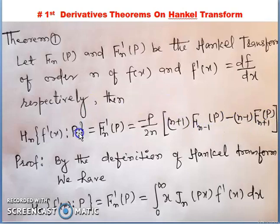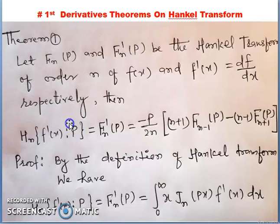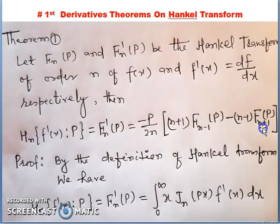Let us repeat: n is the order; the Hankel transform of f'(x) such that p is the parameter equals fn'(p) = -p/(2n) * [(n+1)*f_{n-1}(p) - (n-1)*f_{n+1}(p)].